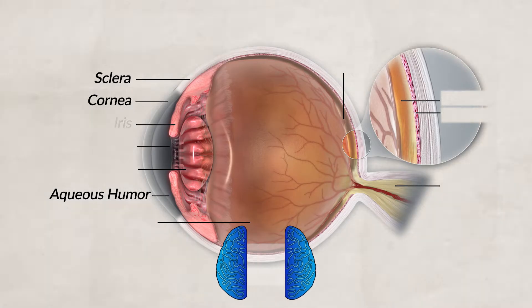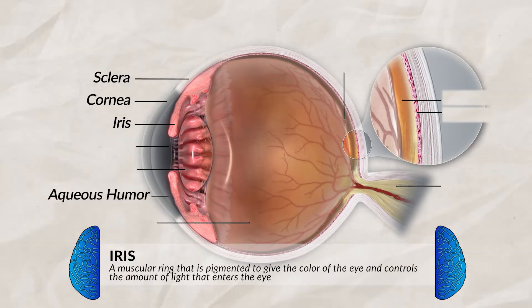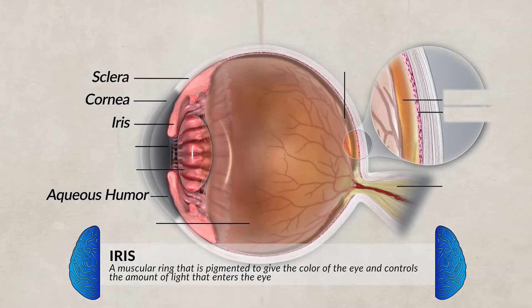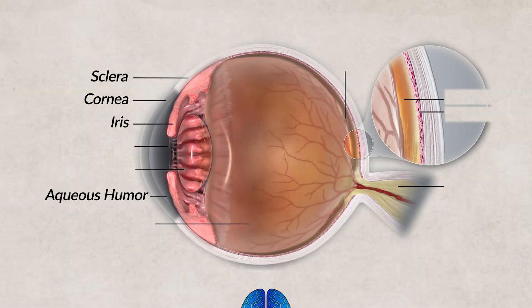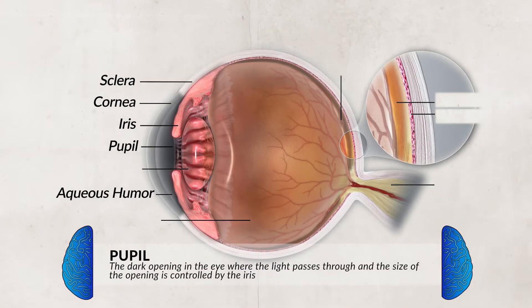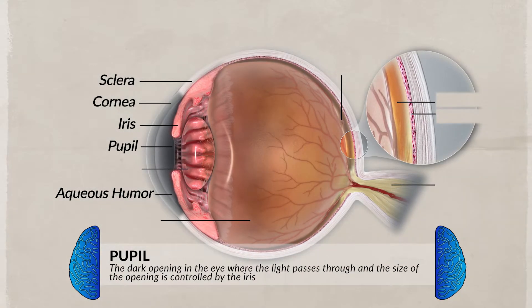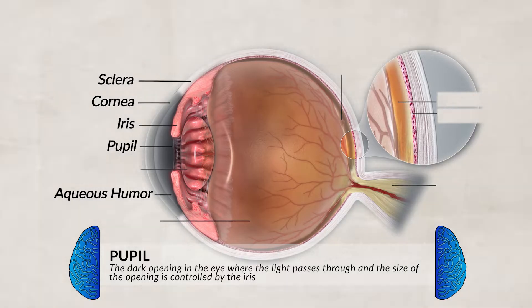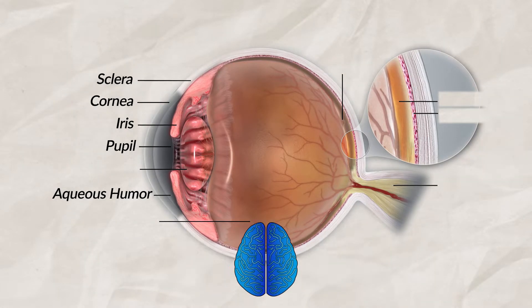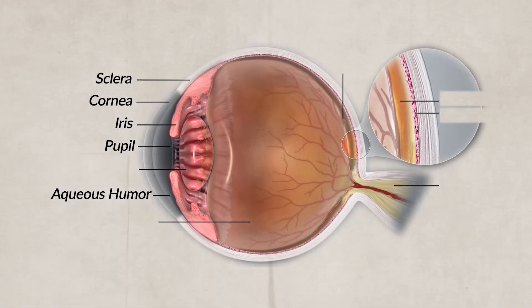Moving inward, we have the iris. The iris is a ring-shaped membrane located behind the cornea and is what determines a person's eye color. The iris surrounds the pupil and is made up of two different muscles. It doesn't actually receive light, but it controls how much light enters the eye by contracting or relaxing. The pupil is the dark part of your eye — it is the hole between the iris — and this is where light passes through upon entering the eye.